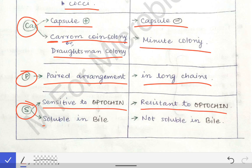The second 'S' stands for solubility in bile — Streptococcus pneumoniae is soluble in bile, while Viridans streptococci are not soluble in bile. You can see how easily you can remember the difference between these two bacteria using the simple mnemonic 'I LIKE CAPS.'